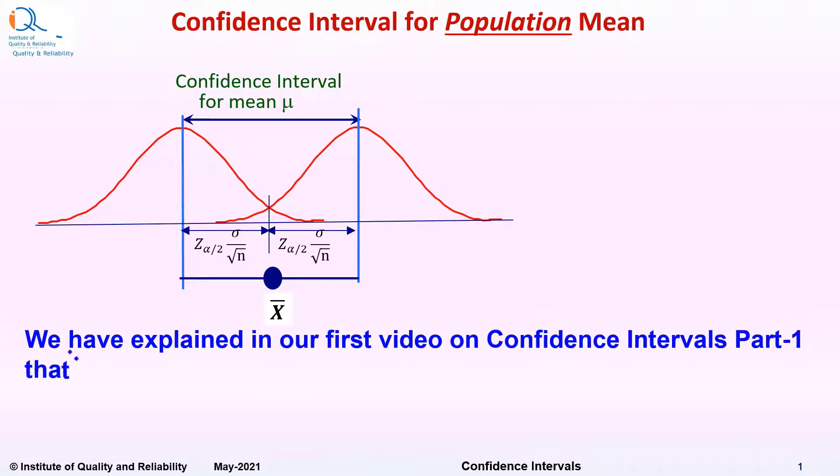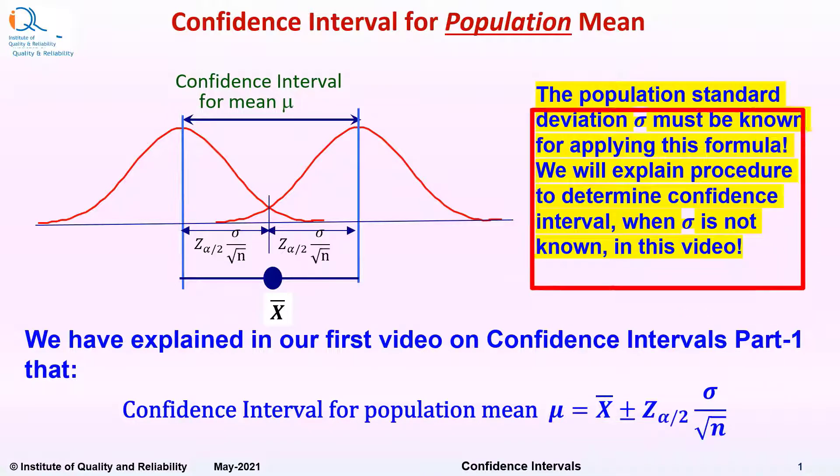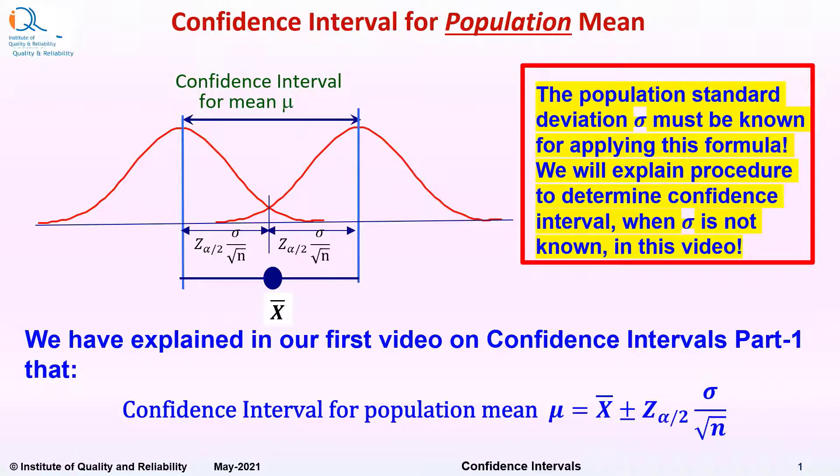We have explained in our first video on confidence interval part 1 that confidence interval for population mean μ equals x̄ ± z(α/2) × σ/√n. The population standard deviation must be known for applying this formula. We will explain the procedure to determine confidence interval when sigma is not known in this video.